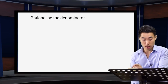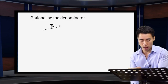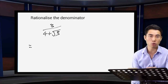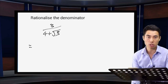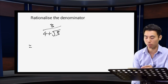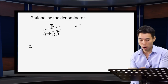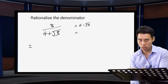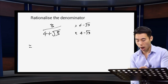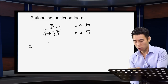The second example we're going to look at is where we have a number and a surd on the bottom. In this case, we need to multiply the top and bottom of the fraction by something that gets rid of the surd on the bottom. This is very similar to the difference of two squares method of factorising.